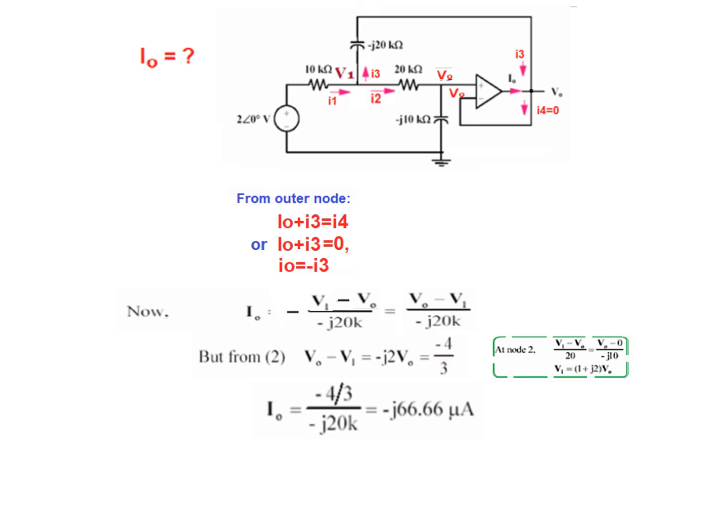Minus J20. And that is by solving you get minus J66.1 micro ampere. Because we are dividing by kilo here. And converting into the cosine form, it is 66.6 cos 5000T minus 90 micro ampere. I hope this gives some idea about the working of operational amplifier.